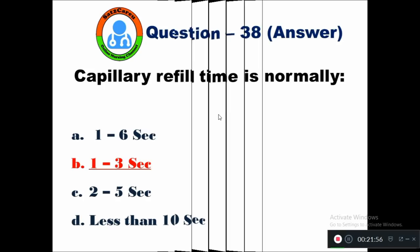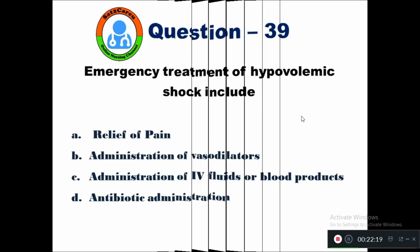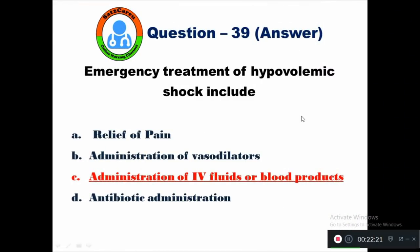Question 39: Emergency treatment of hypovolemic shock includes — option A relief of pain, B administration of vasodilators, C administration of IV fluids or blood products, D antibiotic administration. The right answer is option C — administration of IV fluids or blood products.